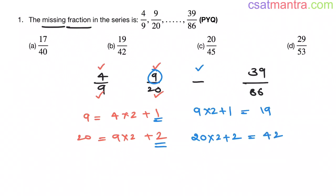That is 42. Now we have to see whether 19 by 42 also follows the same condition, so that we get 39 by 86 my friends. Now 19 into 2 plus 1, that is 39. Yes, it follows.